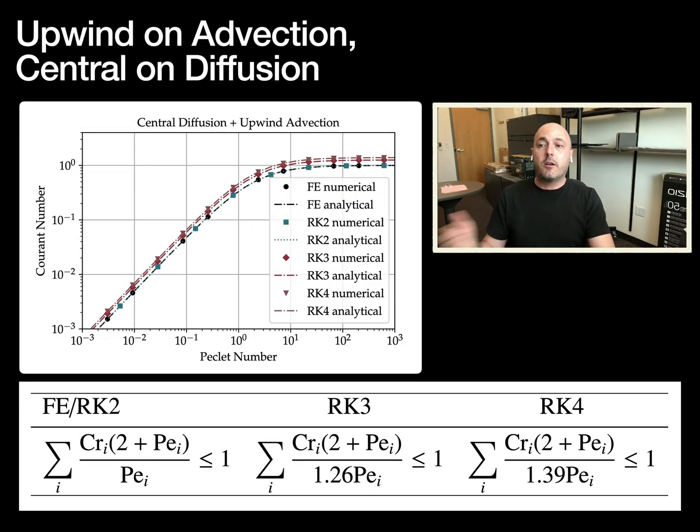On to upwind on advection, central on diffusion. In this case, we were able to get an exact solution, solve the stability polynomial analytically. All of the formulas proposed here were derived analytically using both analytical techniques and perturbation theory, where we perturb the stability polynomial in the small and high Peclet number limits, also described in the paper in detail. In this case, we were able to get the solutions exactly, to the extent that it is impossible to distinguish the numerical from the analytical curves here on this plot.